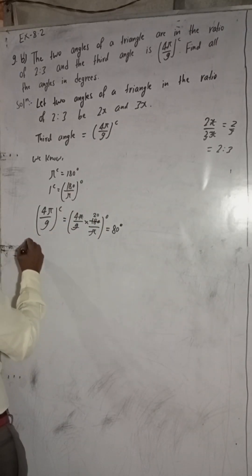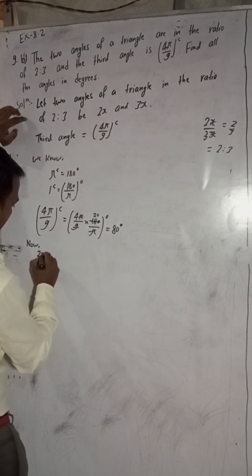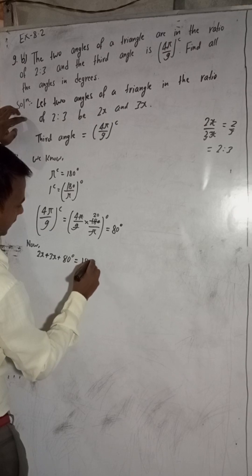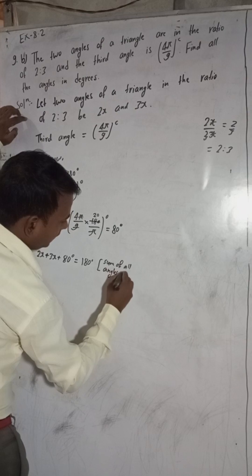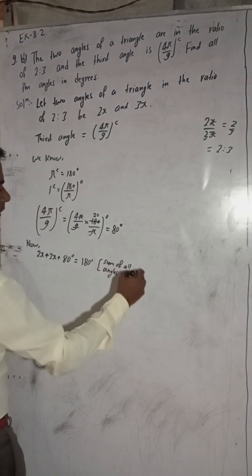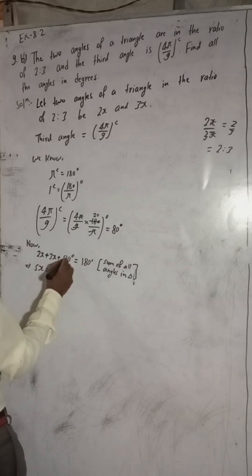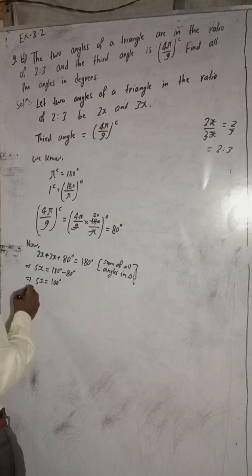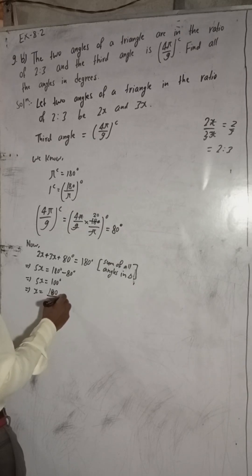So the third angle equals 80 degrees. Now, the sum of all angles in a triangle equals 180°. Therefore: 2x + 3x + 80° = 180°. This gives 5x = 180° − 80° = 100°.